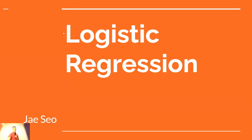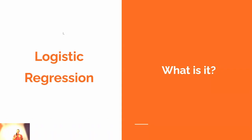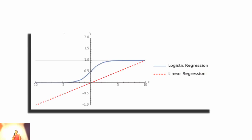So — logistic regression, what is it? We're building on top of linear regression. The simplest way to understand it: linear regression turns into logistic regression, which turns into neural networks, which turns into ChatGPT. In a previous lecture we looked at linear regression in a 2D graph. On the visual you can see an orange line and a blue line — the orange is linear regression and the blue is logistic regression.